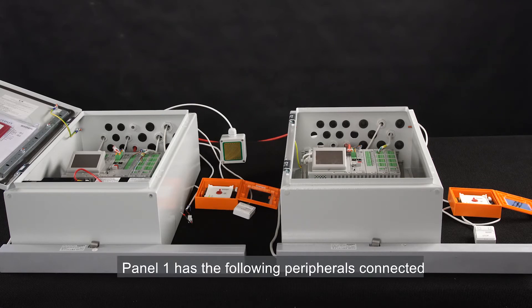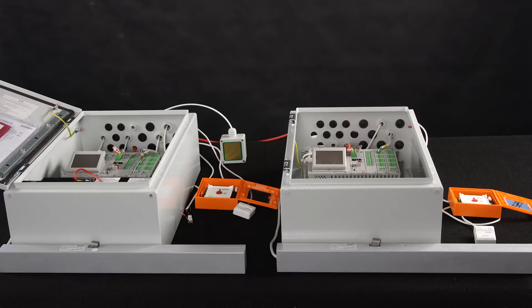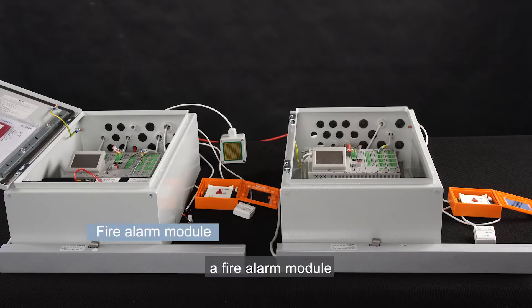Panel 1 has the following peripherals connected: one actuator, one brake glass unit, a manual override switch, a fire alarm module, and a rain sensor.